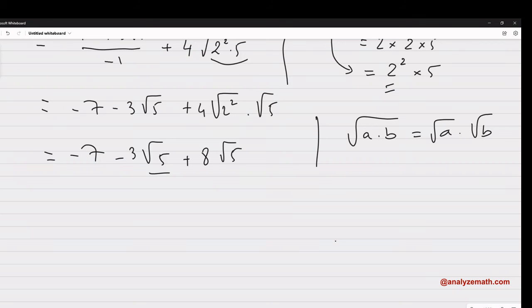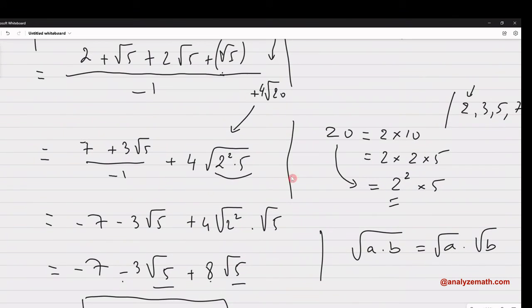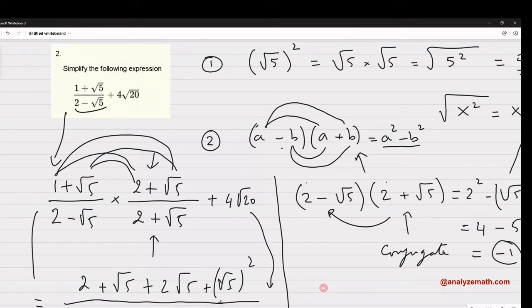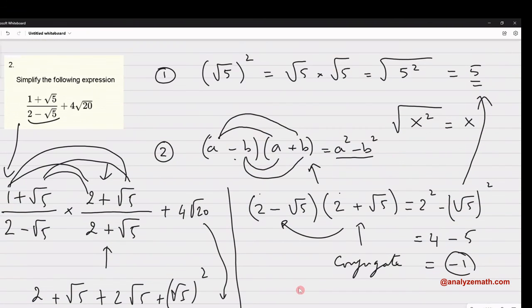Now, the radicands here are the same, so I can group. Minus 7. Now, minus 3 plus 8 gives me 5, square root of 5. This is the simplified form of the expression given above. This expression here. Now, what are the main ideas? The main ideas are as follows.